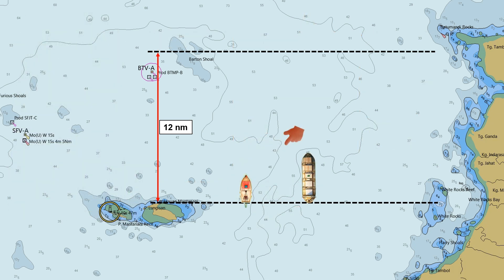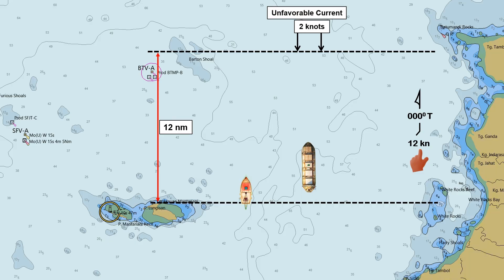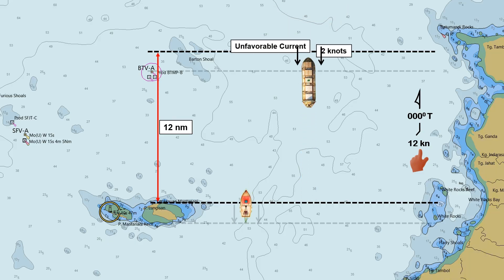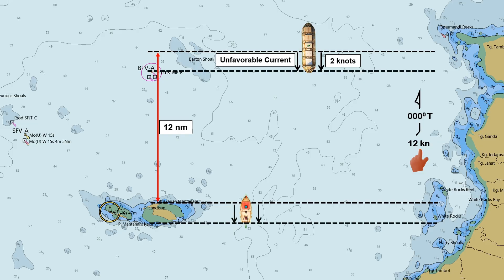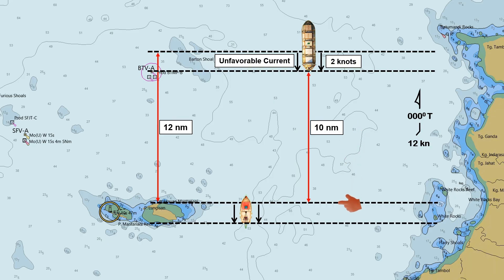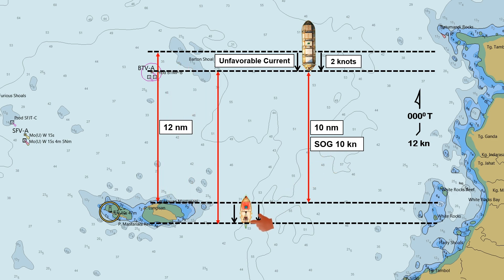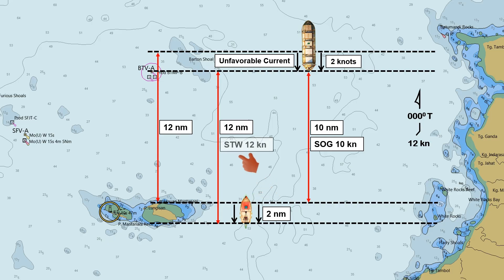In the third scenario, the current is moving in the opposite direction of the ship's heading at a speed of 2 knots. The ship is maintaining the same course and engine speed as in the previous scenario. The ship traveled a distance of only 10 nautical miles in one hour, relative to the island due to the effect of the adverse current, resulting in a speed over ground of 10 knots. While the parallel distance traveled relative to the floating boat remains 12 nautical miles, because the boat moves 2 nautical miles astern due to the 2-knot adverse current, resulting in a speed through water of 12 knots.